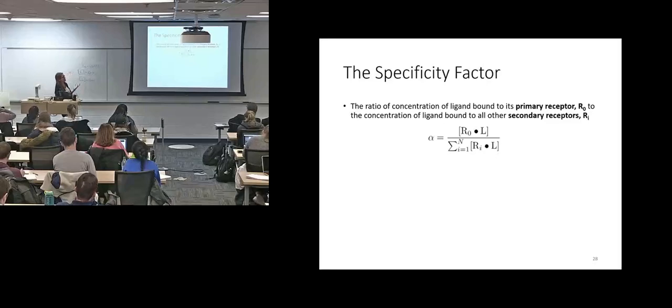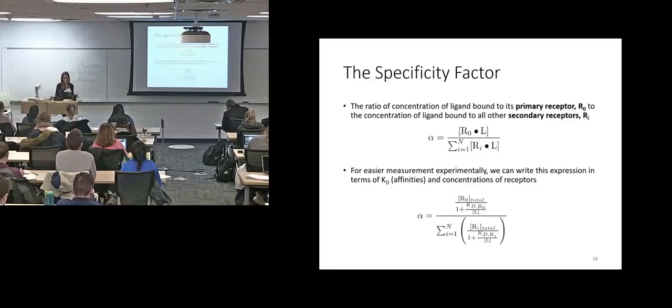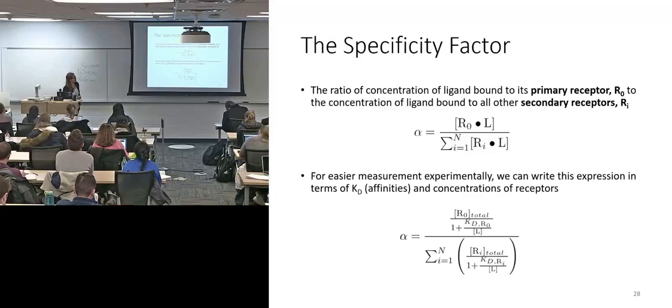Here are these equations again. The ratio of concentration of ligand bound to its primary receptor over the sum of all of the secondary receptors is specificity factor alpha. And for easier measurement, we can write it in terms of KDs and concentrations of the receptors that are unbound.